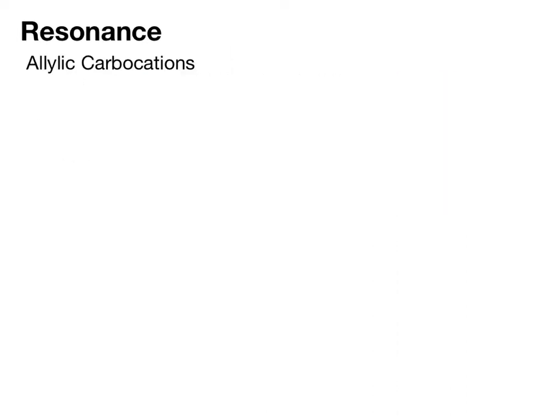We're going to look at some different resonance patterns, starting with allylic carbocations. We're going to see that there are really two main categories: three-atom systems and two-atom systems. In this case, we have a three-atom system.